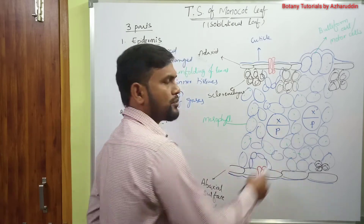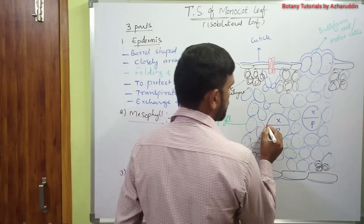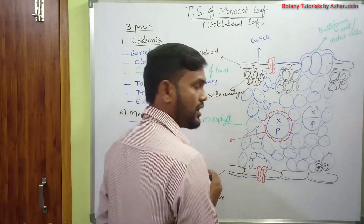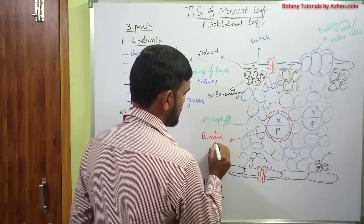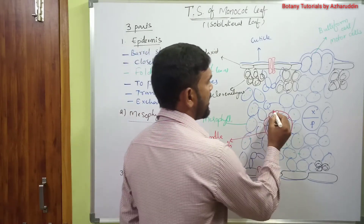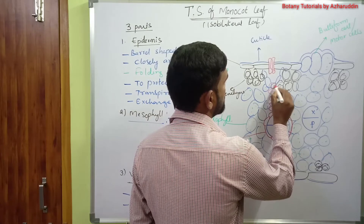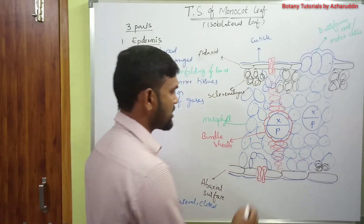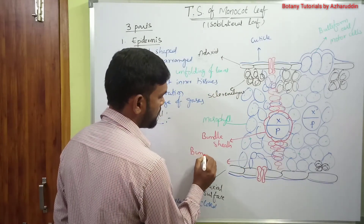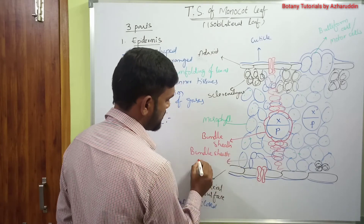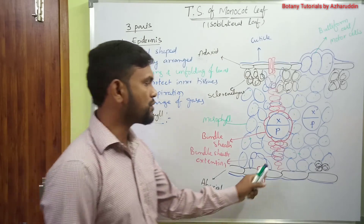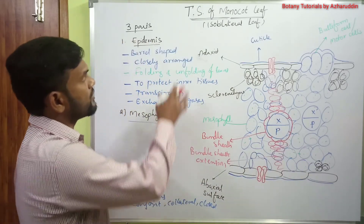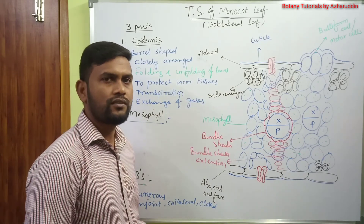In monocot leaves, the vascular bundles are surrounded by a special type of mesophyll tissue that forms a wreath around the vascular bundles, called the bundle sheath. The bundle sheath extensions are useful in transportation of food materials and organic substances to the vascular bundles. This concludes the transfer section of monocot leaves. In the next class, I will come with another topic. Thank you.